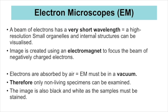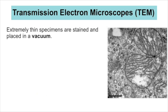Electron microscopes use a beam of electrons to create the image. Electrons have a very short wavelength, which is why electron microscopes have a higher resolution, enabling small organelles and internal structures to be visualized. An electromagnet focuses the beam. You cannot use living samples because air would absorb the electron beam, so specimens must be placed in a vacuum. The image is in black and white, so staining is needed to add colour, or colour can be added artificially afterwards.